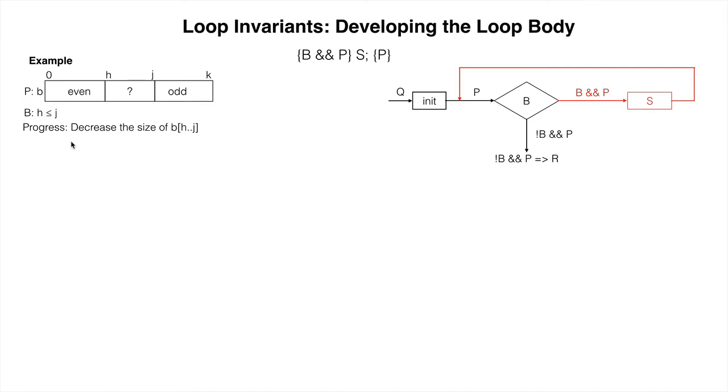Since you've seen something like this before, let's try to do it here with as few array element swaps as possible. Looking at the unknown segment, B sub H dot dot J, there are three cases.